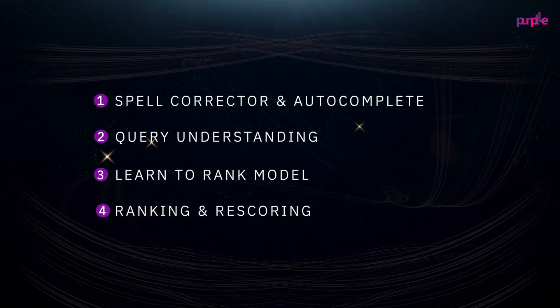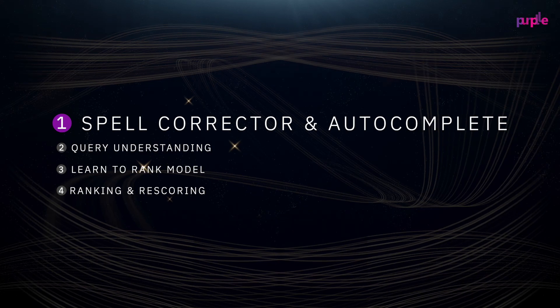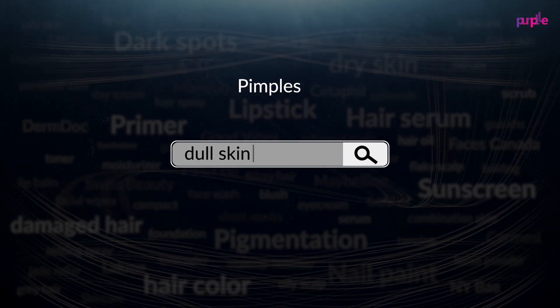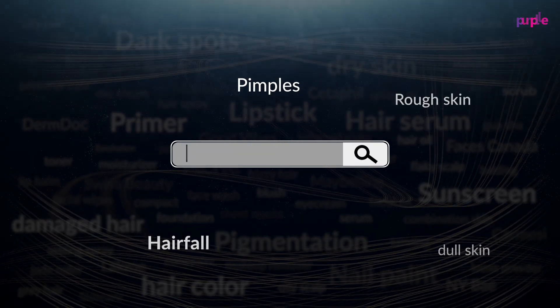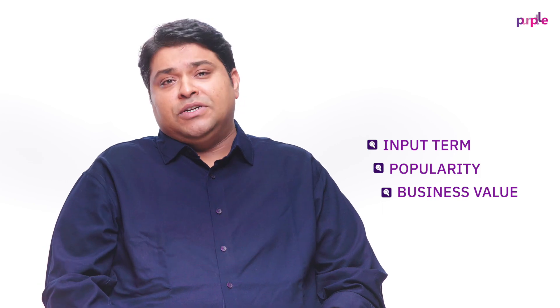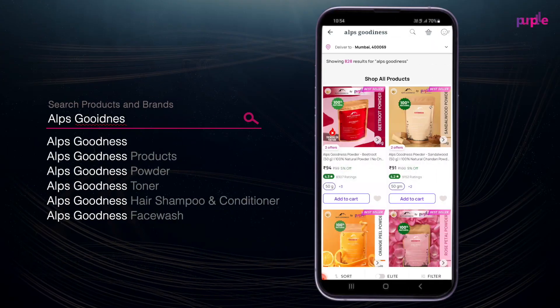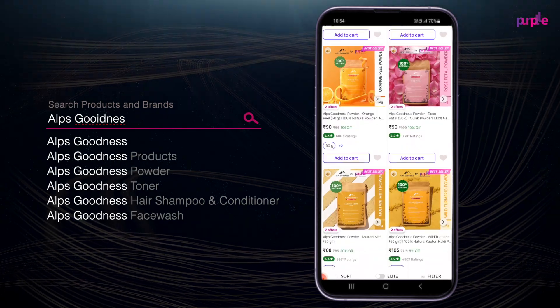There are four parts of search. Part one is the spell corrector and autocomplete. To do this, we maintain a dictionary of millions of search phrases for beauty, and this is also constantly updated based on your current search patterns. The phrases are then ranked based on the relevance to the input term, their popularity, the likelihood of the phrase getting clicked, and their business value, or the likelihood of the term leading to purchases once searched. We also have a layer of fuzzy logic built in on top of this to help you in case of spelling errors. All these lead us to the most relevant and autocorrected search term for your inputs.